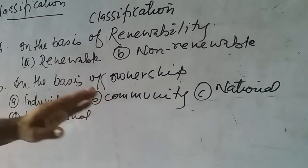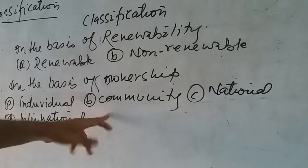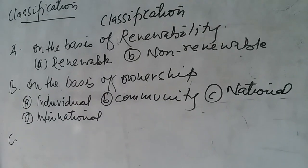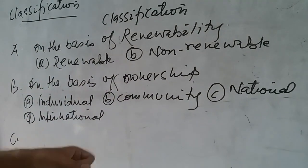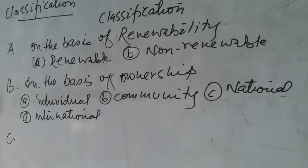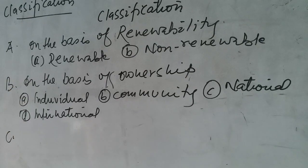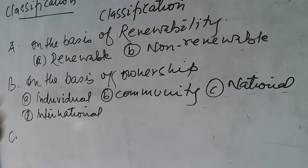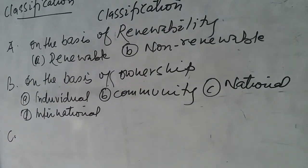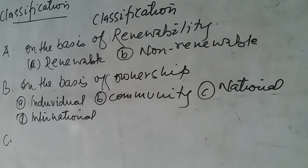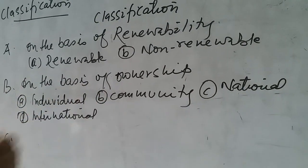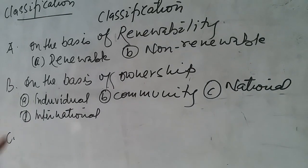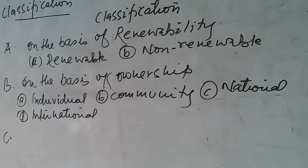Community resources are those which are available somewhere but can be used by all community people and all society, like village ponds, village park, village well. These are community resources which can be used by each and everybody, not under the control of any single person.